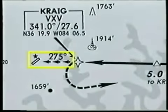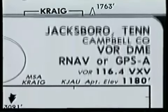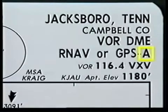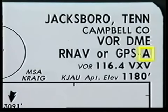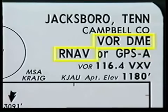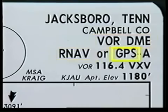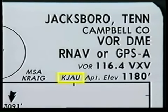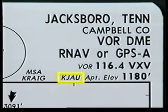Where straight-in minimums are not provided, the approach is identified with a letter and only circle-to-land minimums are specified. Here you can fly the circling approach by using either the VOR DME RNAV or by using Global Positioning System. When GPS can be used for the approach, the four-letter Jeppesen NAV data airport identifier is added to assist in selecting the appropriate airport information from the GPS database.